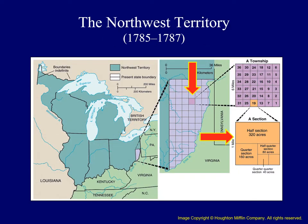Here we are back at the map of the Northwest Territory. On the right you see a close-up of one region in Ohio which was surveyed under the provisions of the Ordinance. The land is divided into nice square townships, which are then further divided into 36 sections. Each section is 640 acres or one square mile. The diagram also shows how sections were often cut in half to include smaller parcels of land.